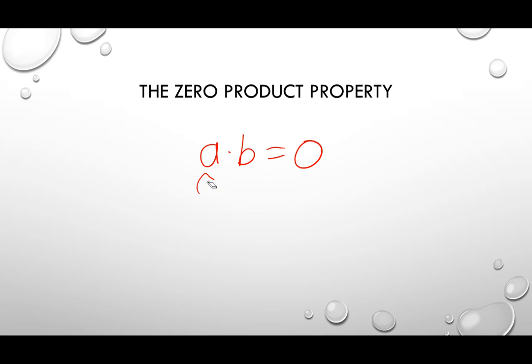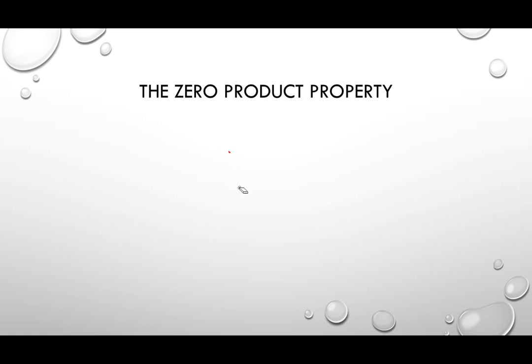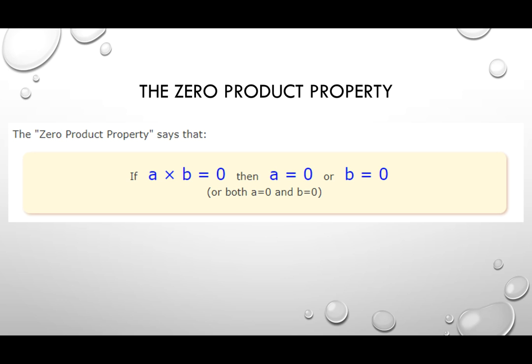This is a very important fact. It's sort of like solving a mystery in a way, because we don't know what these numbers are, but we do know that because of their result, one of them or both of them could be zero. We're going to use that to our advantage when we're trying to solve equations for X. That's basically the textbook way of presenting it, but that is what the zero product property is.